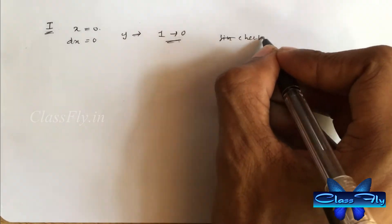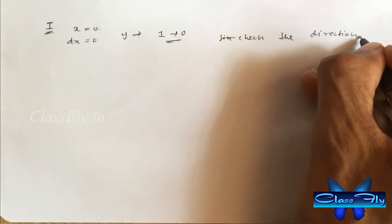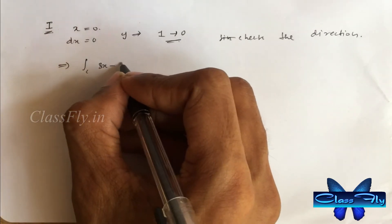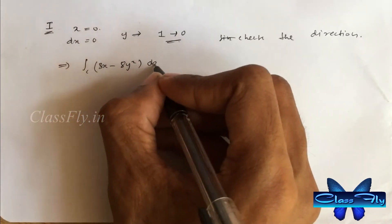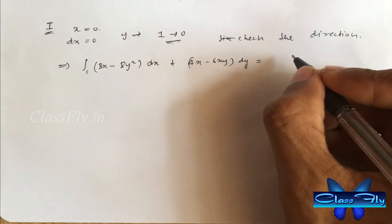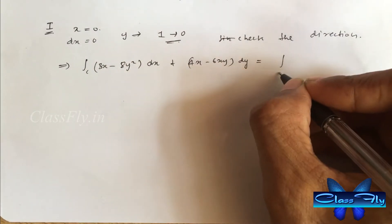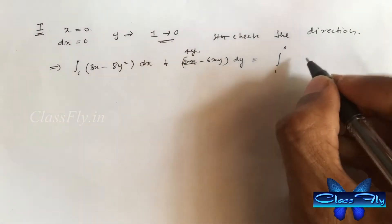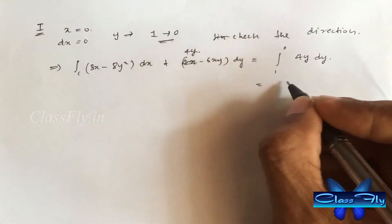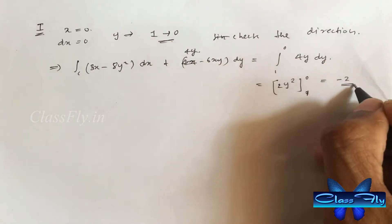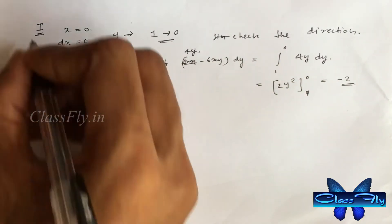Observe the diagram for how the variable varies. Integral c is integral c 3x minus 8y square dx plus 4y minus 6xy dy is equal to integral 1 to 0 4y dy. After integrating and applying limits, we get minus 2.